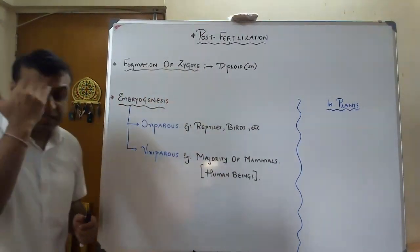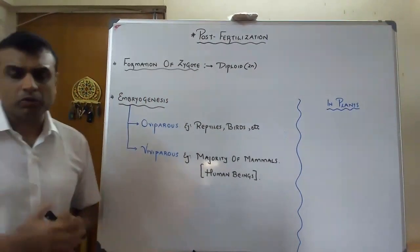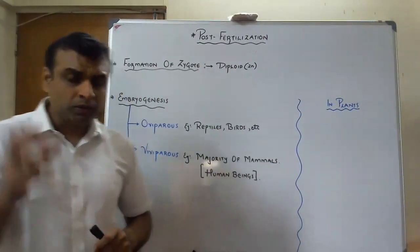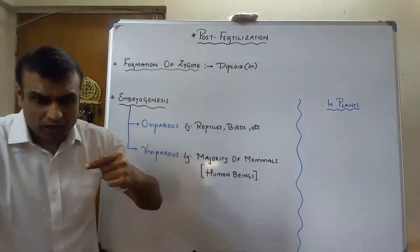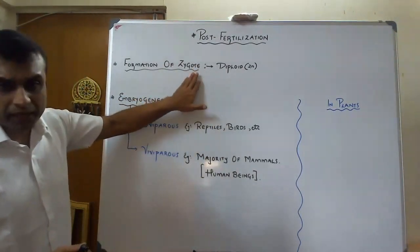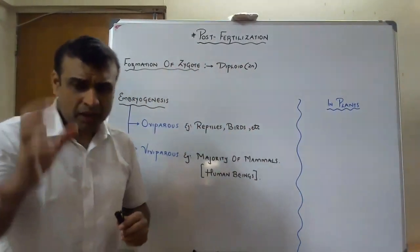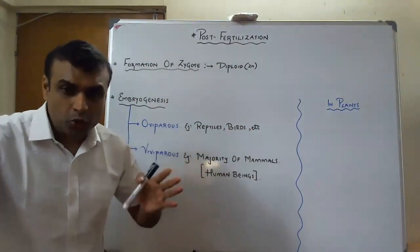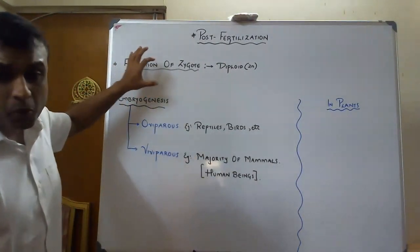Recalling the life cycle patterns from 11th standard — haplonic, diplonic, haplodiplonic life cycles — we can say that the zygote is the most important connecting link between one generation and the next. Parents produce gametes, those gametes fuse to give a diploid zygote, and that diploid zygote develops into a new individual. NCERT also states it is the connecting link between two generations.